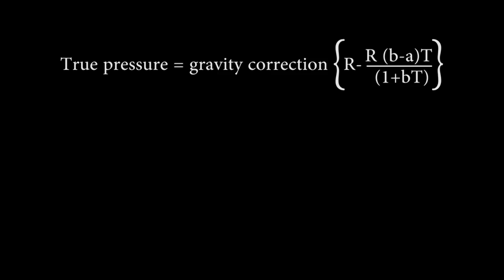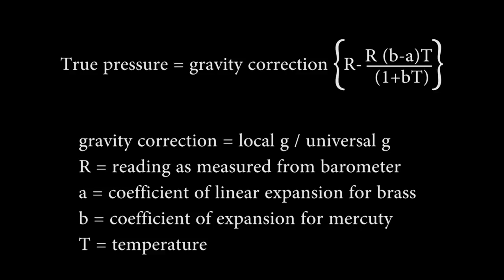Using this equation, we can correct the measured pressure of 645.4 torr for the systematic errors we've been discussing. The result of this calculation is a corrected pressure of 642.7 torr.